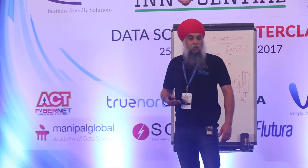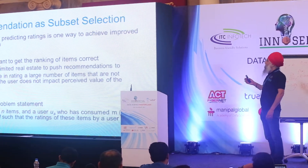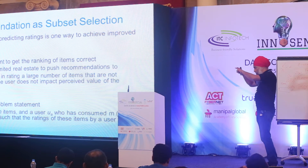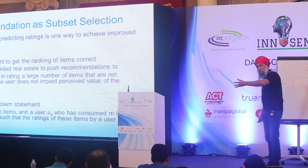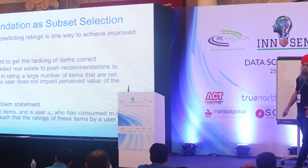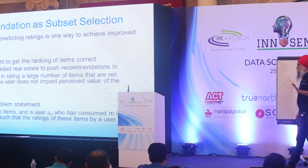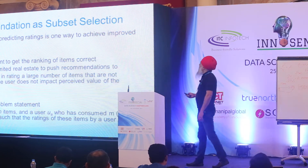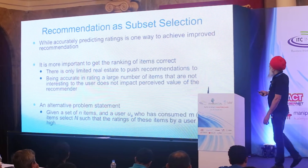So recommendation, rather than being a prediction problem of ratings, instead what we are saying is forget about ratings. I know I only have space on my webpage for five recommendations. Let me just find that subset of five. Who cares about rating, as long as those are five good ones. And that's what we call top-K recommendation.